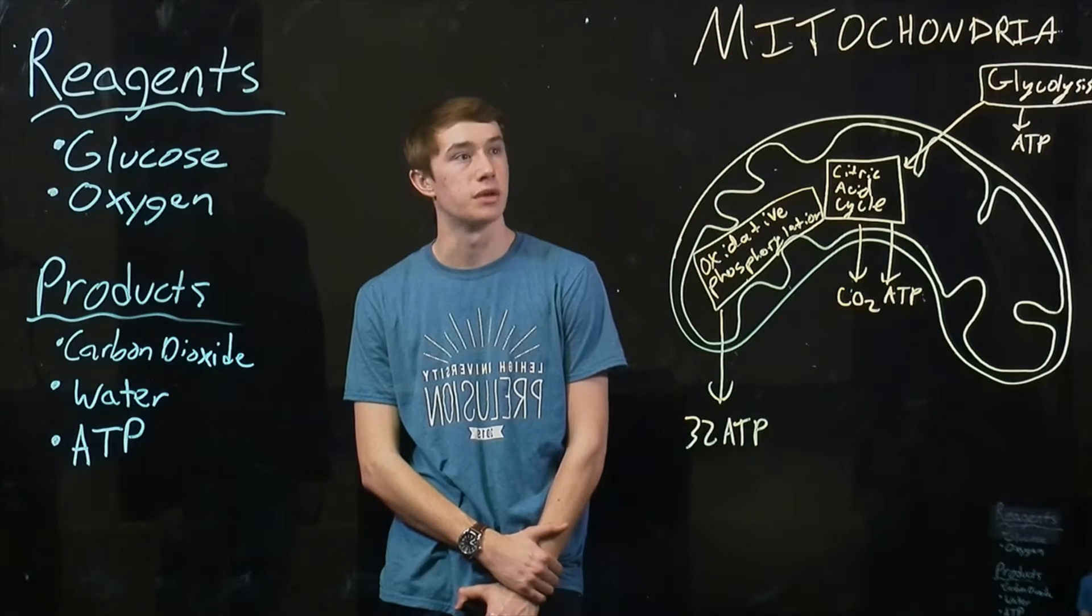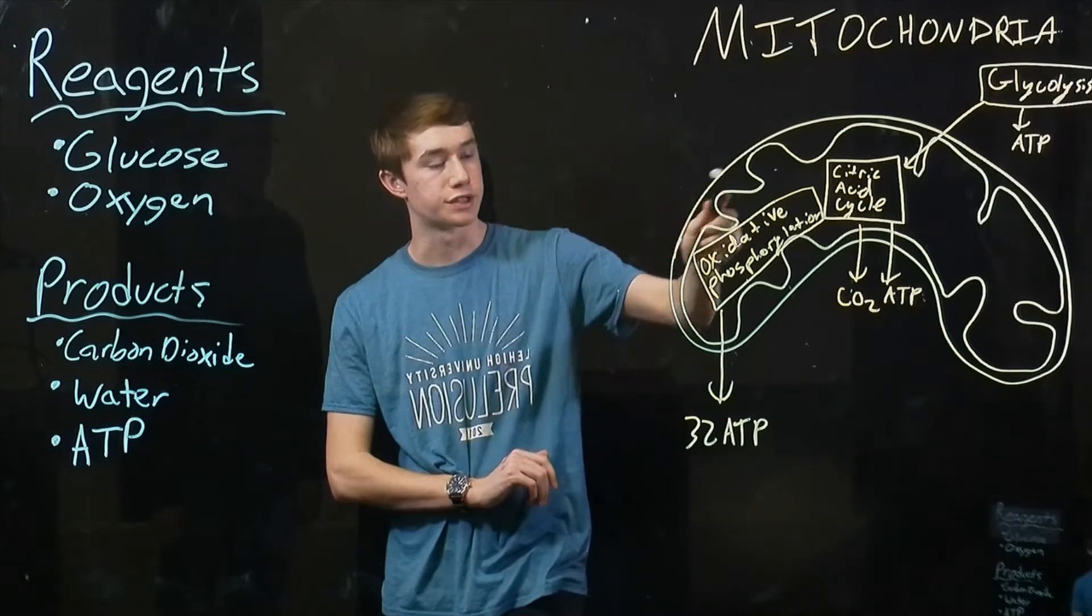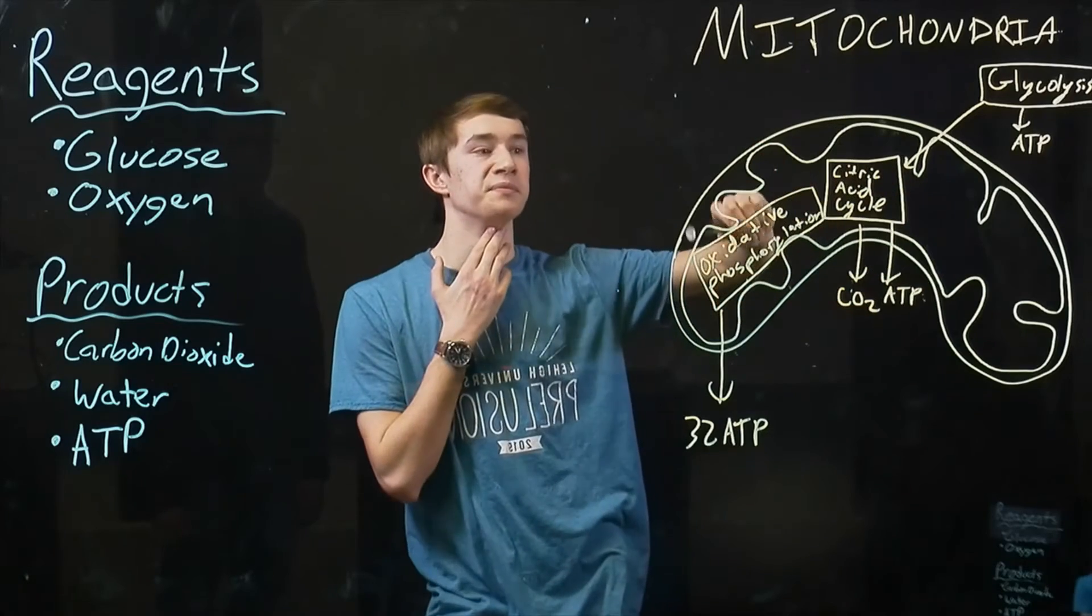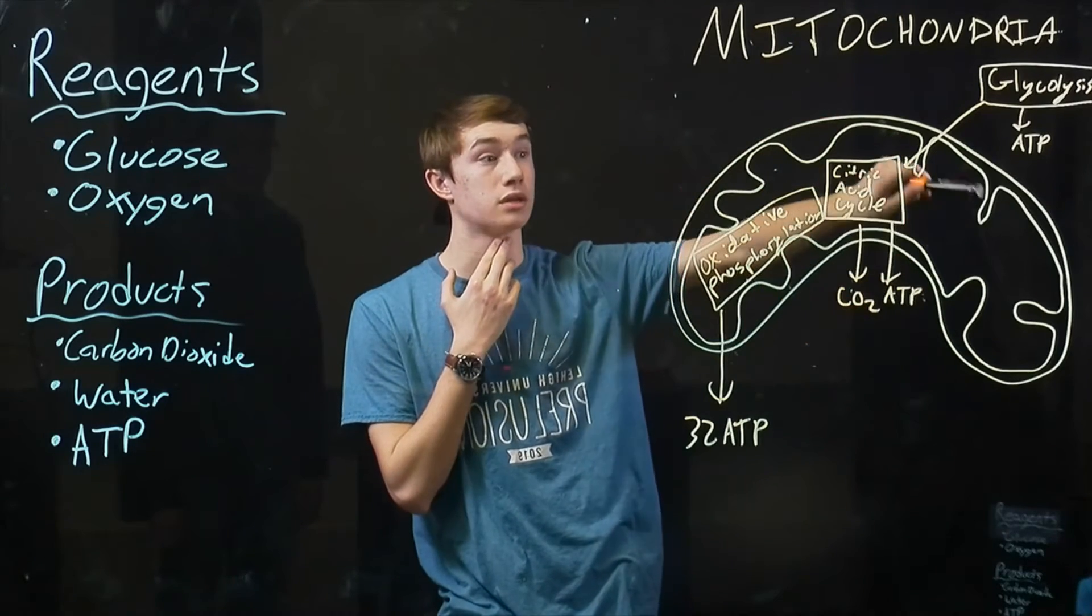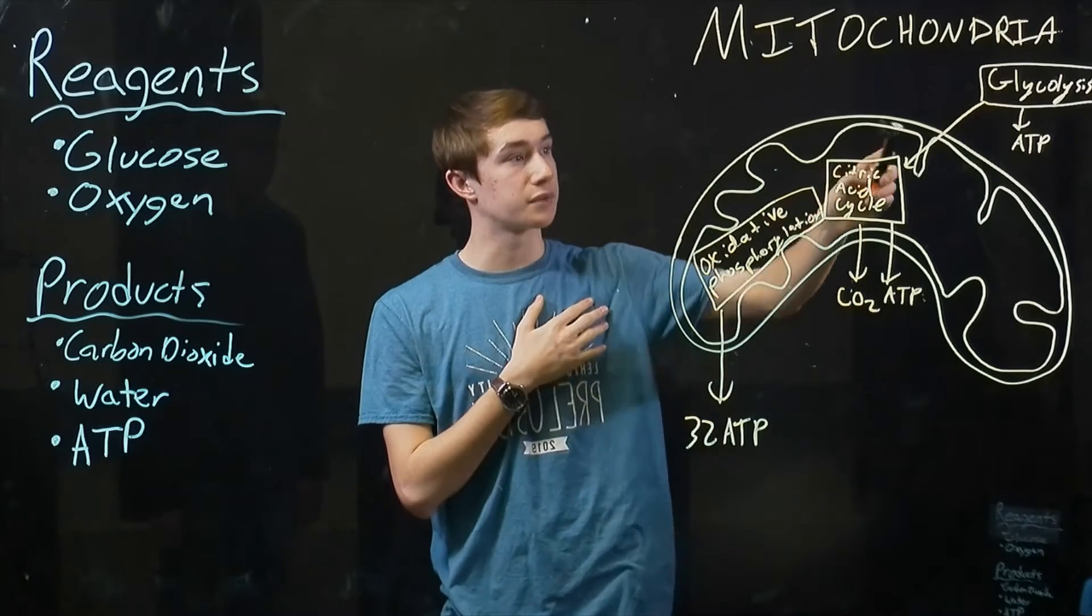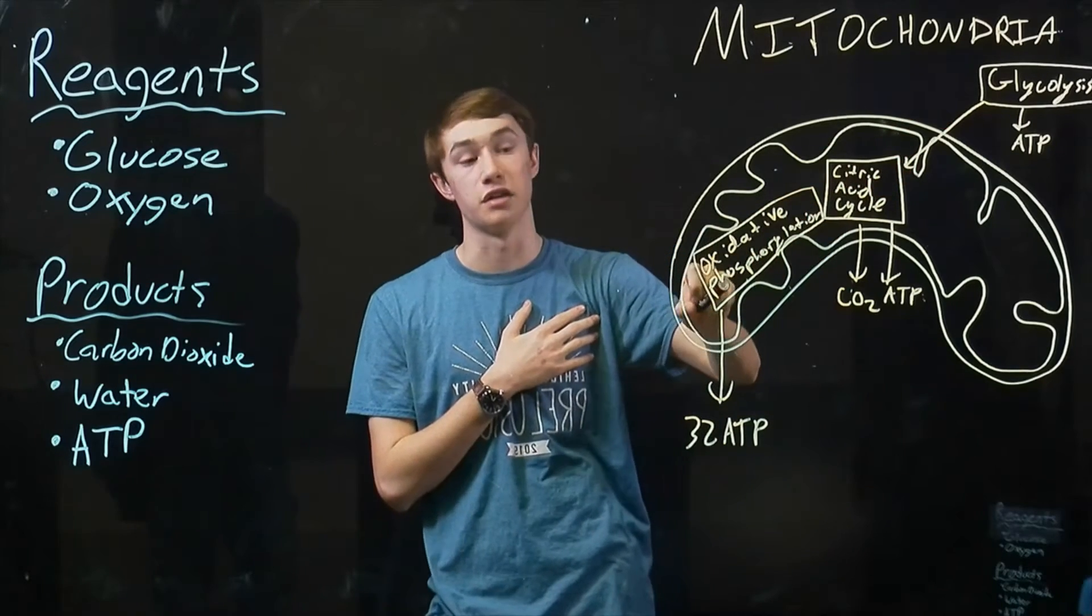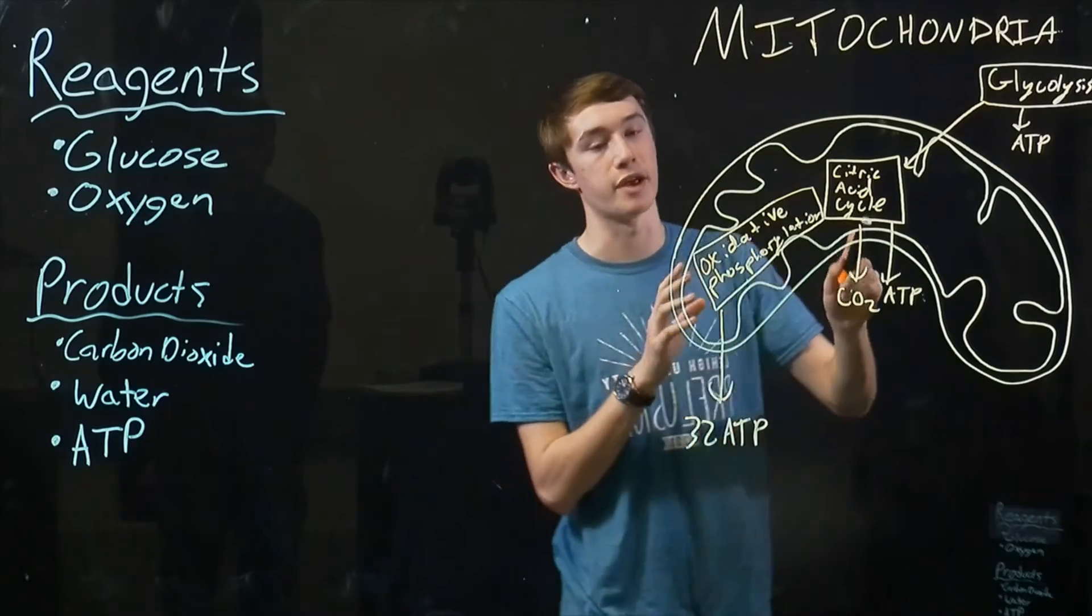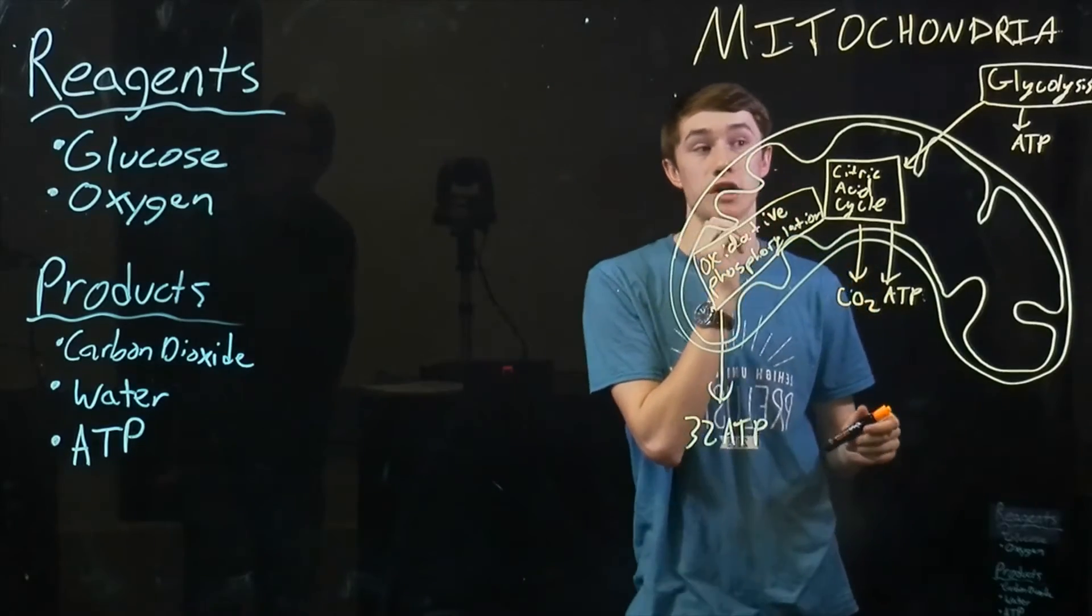All right, so this is a picture of the mitochondria, and this is the basics of the cellular respiration cycle. We've got glycolysis, citric acid cycle, and oxidative phosphorylation. These are the three main steps of cellular respiration.